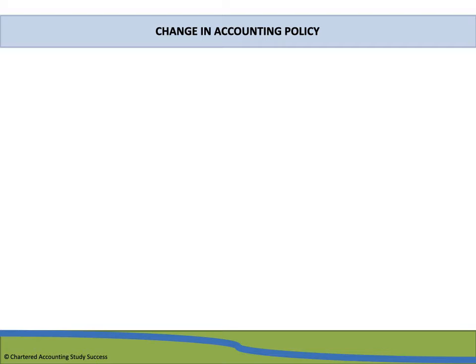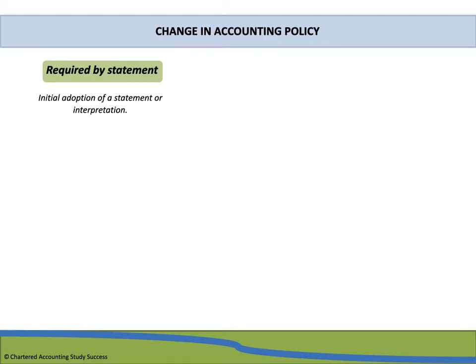Good day and welcome to this presentation. Today we will be looking at change in accounting policies. There are two instances when a company needs to change its accounting policy. This change could be required by a standard — for example, the initial adoption of a standard, a new standard, or even an interpretation. When this occurs, the change must be accounted for based on the transitional provisions as set out in the standard.